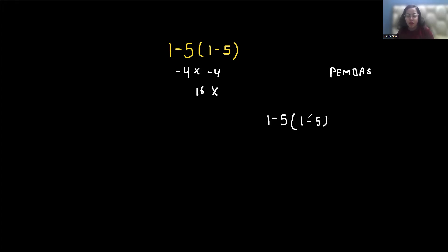Here we have multiplication. According to order of operation, first we solve the parenthesis. So 1 minus 5 here, 1 minus 5 here - 1 minus 5 is minus 4, and in between there is a multiplication sign.